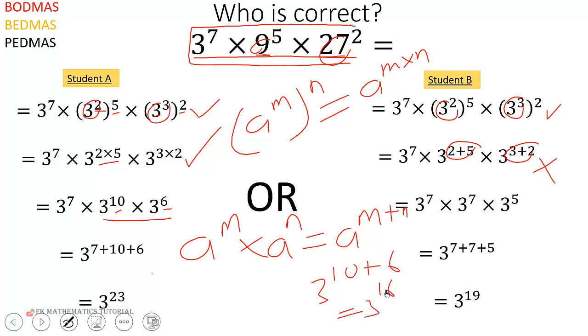Then again you pick 3 exponent 7 times 3 exponent 16 which will give you 3 exponent 7 plus 16 and that will give you 3 exponent 23.